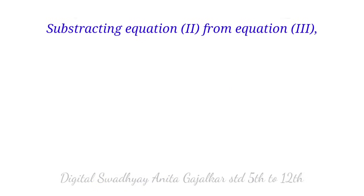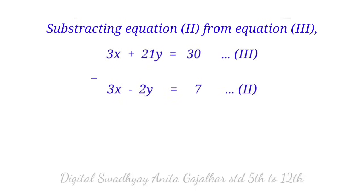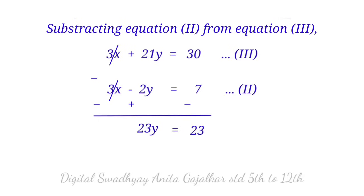Subtracting equation second from equation third: 3x plus 21y equal to 30, minus (3x minus 2y equal to 7). Due to subtraction, signs of second equation change, giving 23y equal to 23.